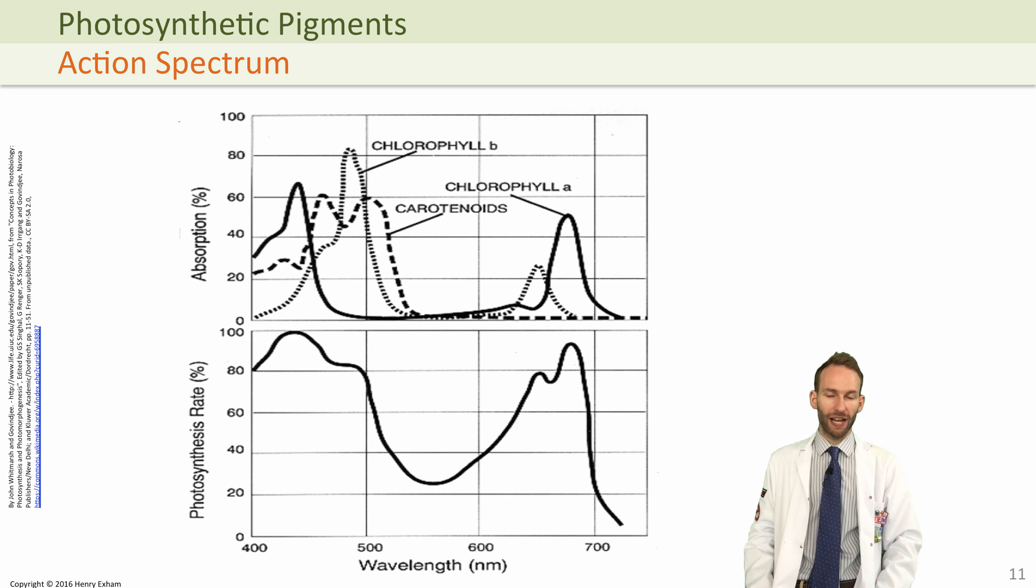Where you've got most of the absorption, again between 400 and 500 nanometers by mostly chlorophyll A, chlorophyll B, and some of these carotenoids, you get a very high rate of photosynthesis. In the green range where they are not absorbing much light, the rate of photosynthesis is very low.